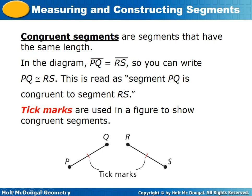Congruent segments are segments that have the same length. In the diagram, segment PQ is congruent to segment RS. The way we know this is the tick marks in the drawing — this is really important. Anytime you see tick marks like this, it tells you those two segments are the same length. The congruence symbol means segment PQ is congruent to segment RS. The tick marks tell us those two segments are the same length, and you'll see this a lot this year.